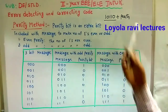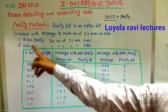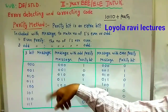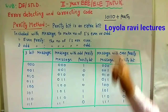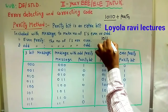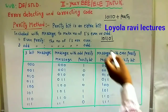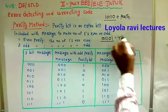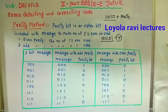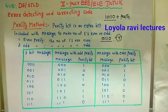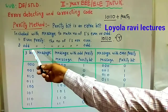So why do we add this bit? We have two types of parity methods: one is even parity and the second is odd parity. Even parity means the number of ones are even. For example, take the code 10110 with a parity bit of 1 — including parity, the total number of ones is 4, which is even, so that is even parity. If we don't have that one, we have 3 ones, which is odd, and that is odd parity. So even parity means the number of ones are even, and odd parity means the number of ones are odd.